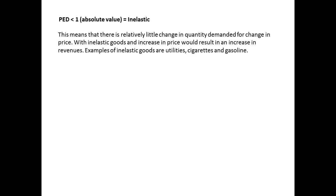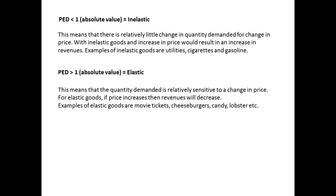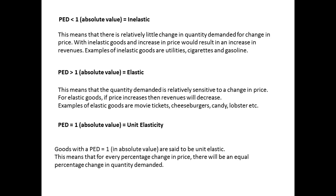A PED greater than 1 in absolute value is considered elastic, meaning that the quantity demanded is relatively sensitive to a change in price. For elastic goods, if price increases, revenues will decrease. Examples of elastic goods are movie tickets, cheeseburgers, candy, and lobster. A PED equal to 1 in absolute value is considered unit elastic, meaning that for every percentage change in price, there will be an equal percentage change in quantity demanded.